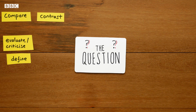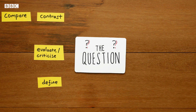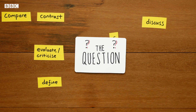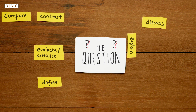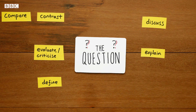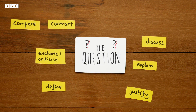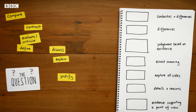Define means to give the exact meaning or meanings of a word, phrase, or theory. Discuss means to explore an issue, giving both sides and looking at any related issues. To explain means to give details about something and the reasons behind it. And to justify means to give reasons and evidence supporting a point of view.